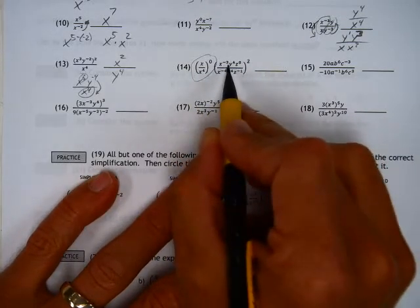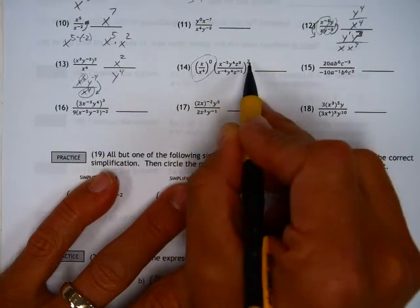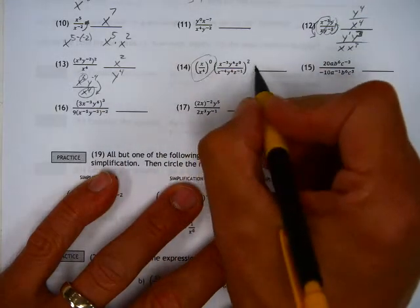Then I would deal with this. Now, because the parentheses around everything, you can first simplify all that stuff and then raise to the power of two. Because that's less stuff to deal with.